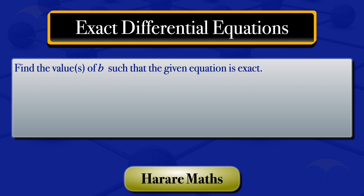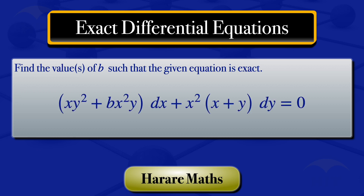In this video, I'm going to find the values of b such that the differential equation xy² + bx²y dx + x²(x + y) dy = 0 is exact.